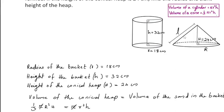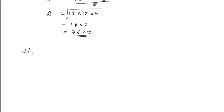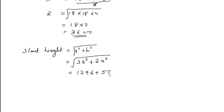Now, we have to find the slant height of the conical heap. Slant height is equal to the square root of r² plus h². r is 36, so we have the square root of 36² plus 24². The square of 36 is 1296, plus the square of 24 is 576.